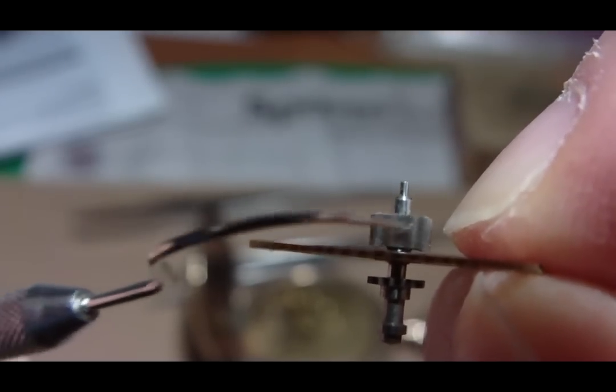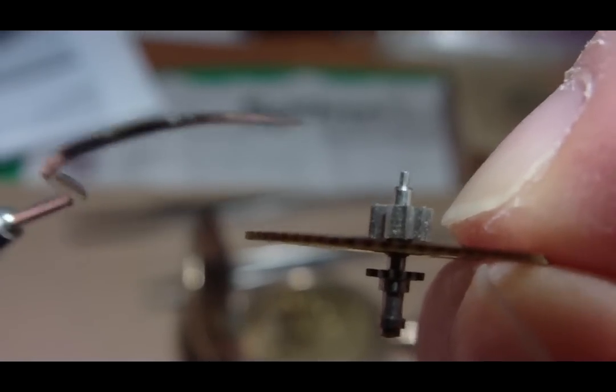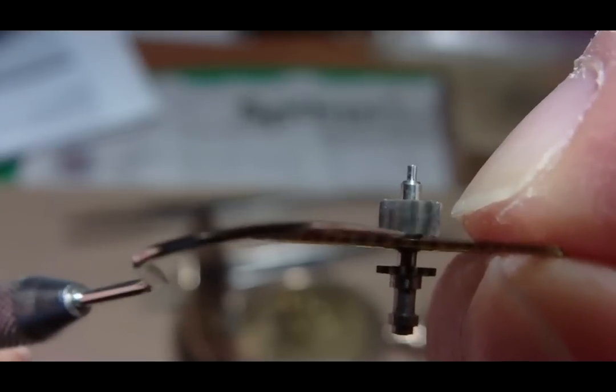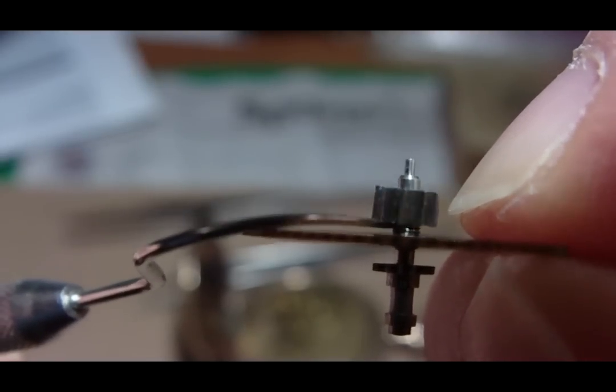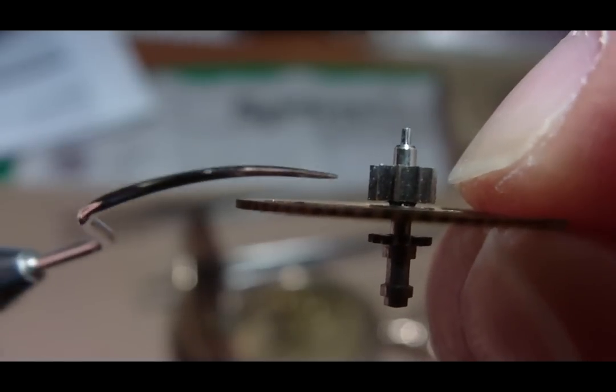What it does when the mainspring breaks, this just spins around after the mainspring breaks to dissipate the power. You can see the little threads there.